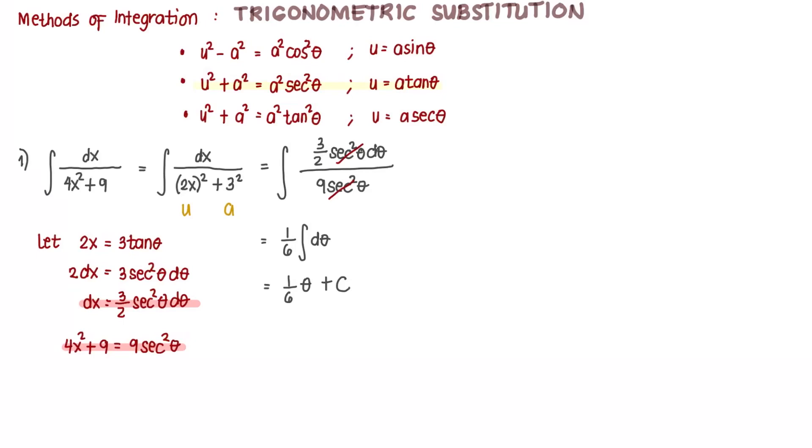We get that from our substitution equation: 2x equals 3 tangent theta. So from that, if 2x equals 3 tangent theta, then tangent theta equals 2x over 3, therefore theta is equal to the arc tangent of 2x over 3.